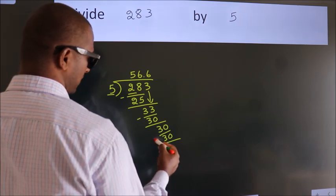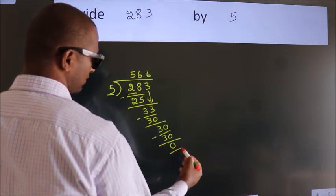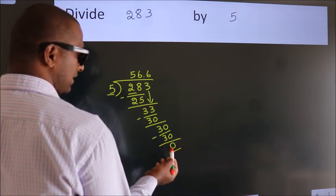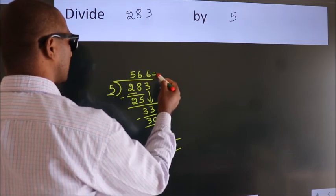Now, we subtract. We get 0. We got remainder 0. So, this is our quotient.